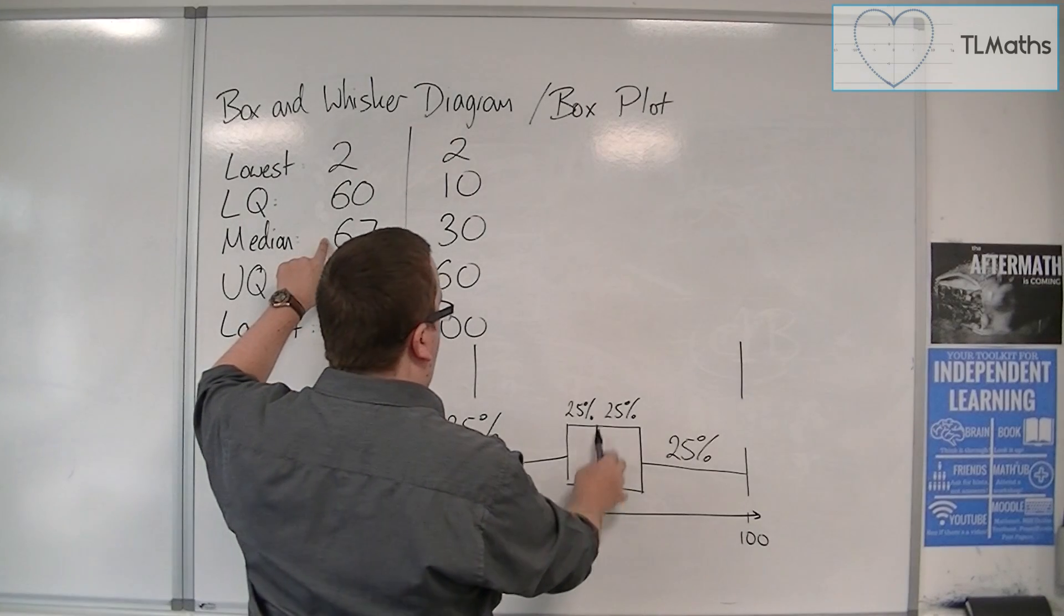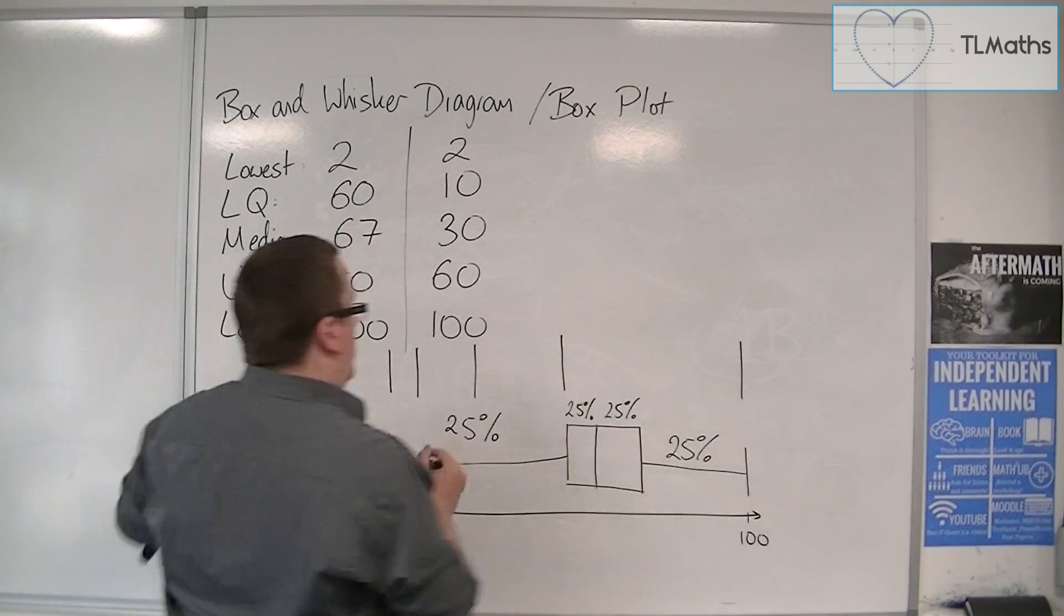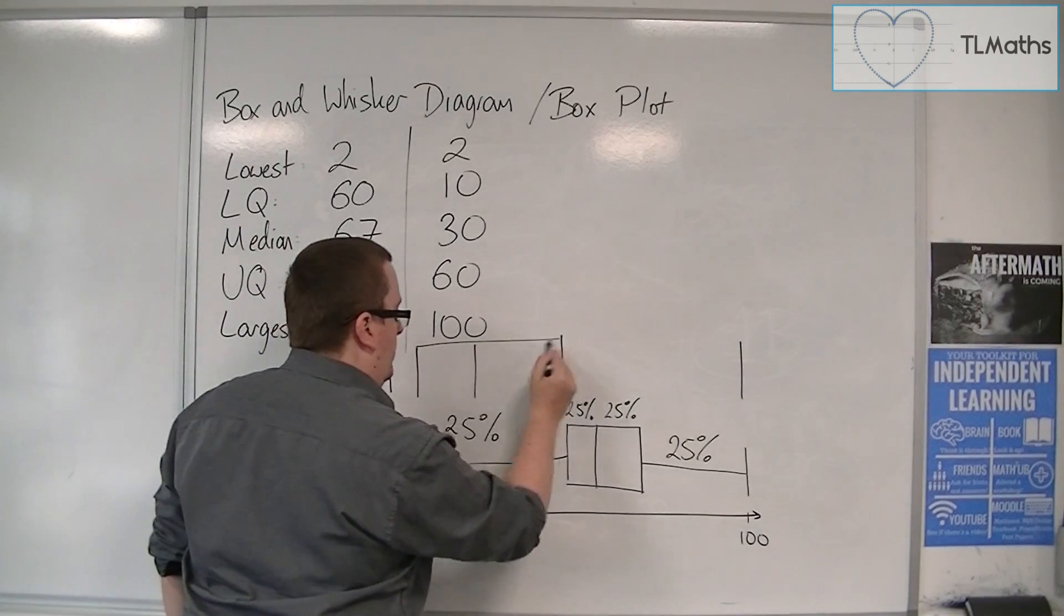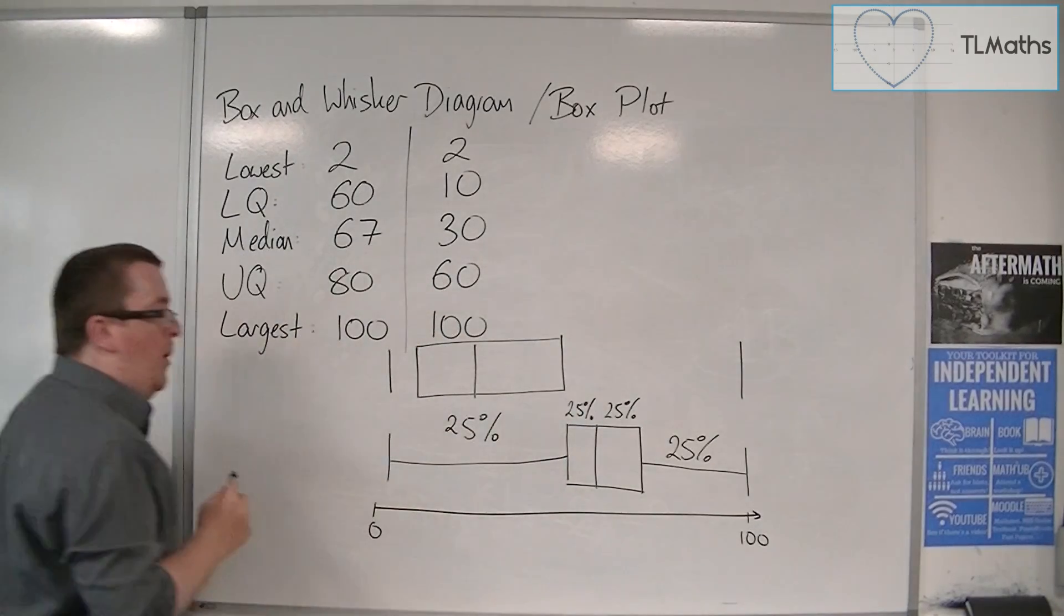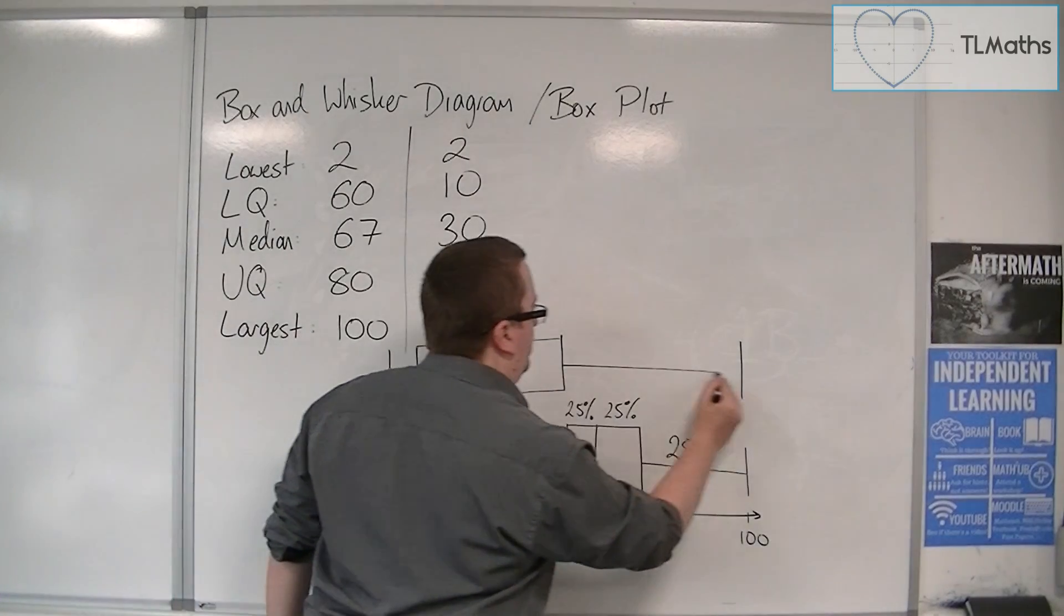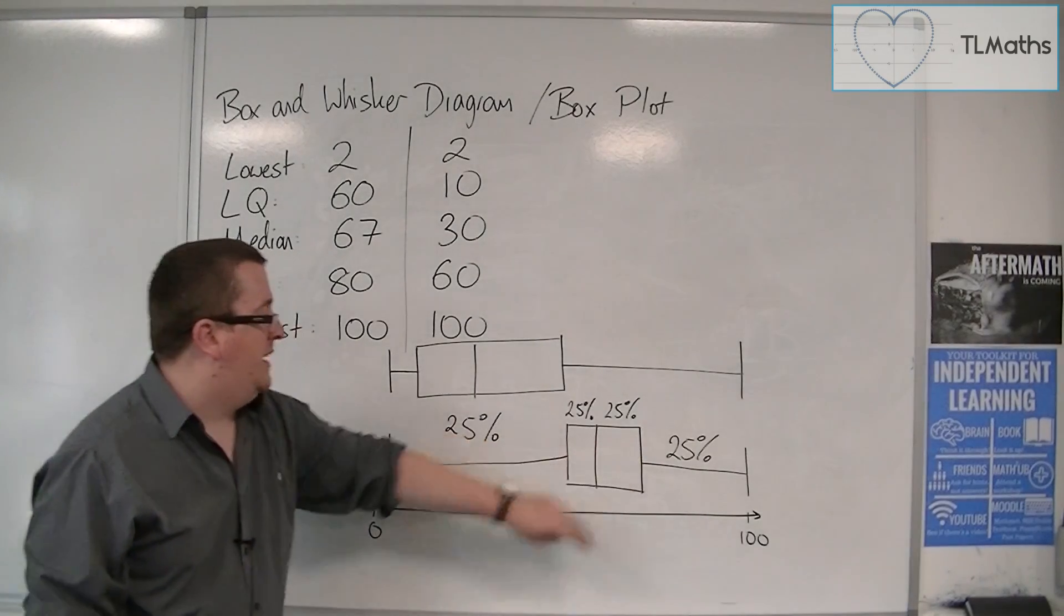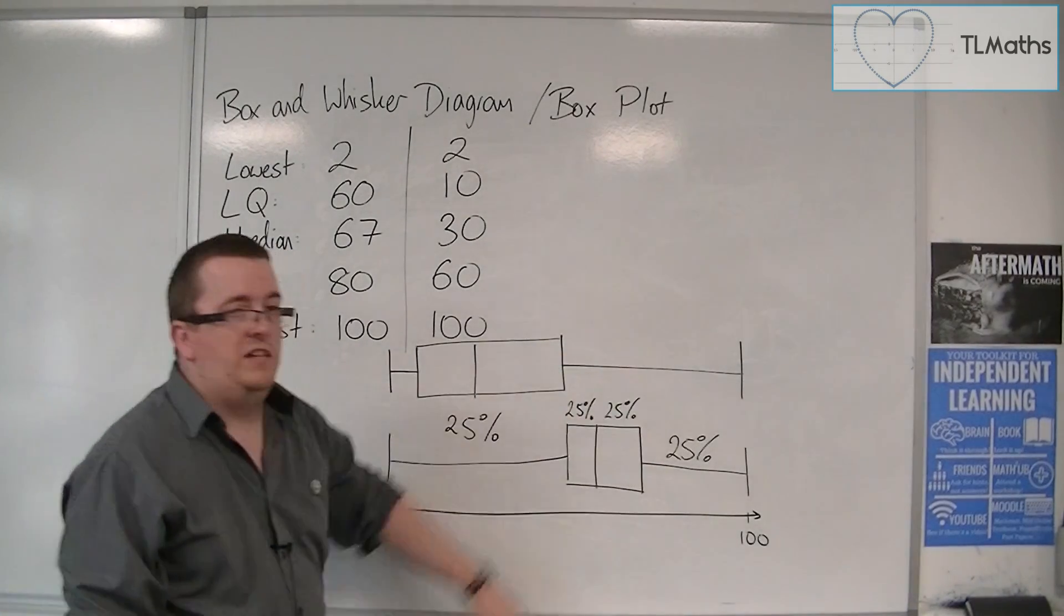Now, I drew that as 67, and that was 60, so they need to match up. So there's our middle bit, the box, and these are the whiskers. So here is my first set of data, here is my second bit of data.